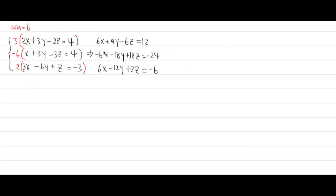Now we're ready to really get rid of the x. Adding equations 1 and 2 together — 6x and negative 6x cancel each other out. Don't cross it out though, because we still need the second equation for the third. The result is 9y minus 18y equals negative 9y, negative 6z plus 18z equals plus 12z, and that equals 12 minus 24, which is negative 12.